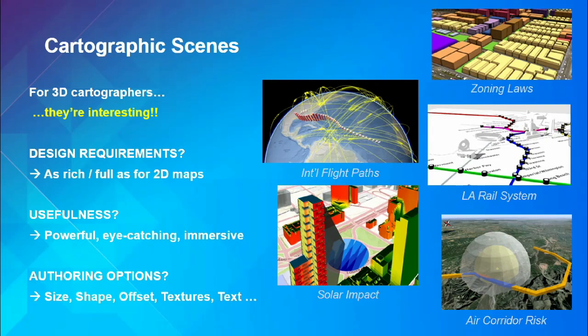If you like to make 3D maps, cartographic scenes are where the fun is. The design requirements are as rich and full as making 2D maps — you get to make lots of decisions. You can make them powerful, eye-catching, immersive. Everything is up for grabs: you don't need to show things their real size. You can use shapes, offset features, use textures, add floating text. All these decisions can be made.